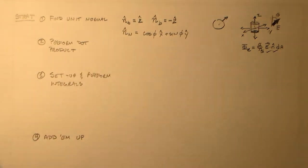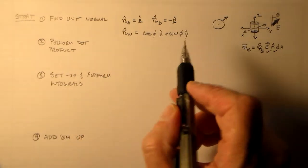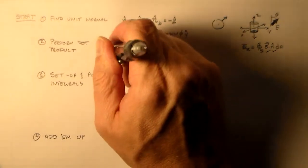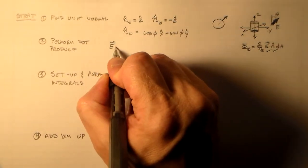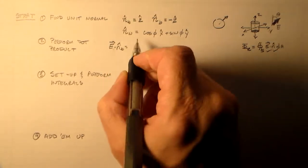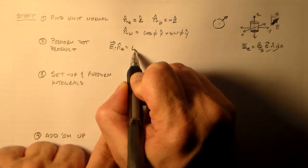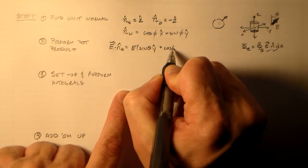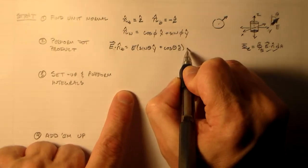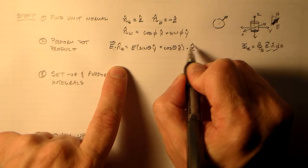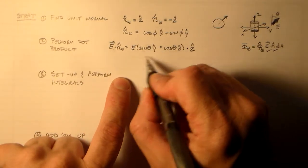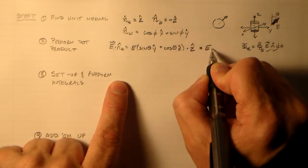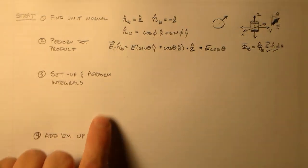So then we want to actually perform the dot product. So e dot n-hat-t, well, that's just e sine theta y-hat plus cosine theta z-hat. So we just project along the z-hat direction, so y-hat is perpendicular to that, so we just have e cosine theta.